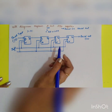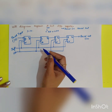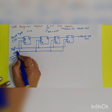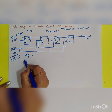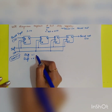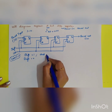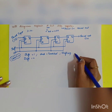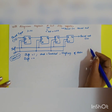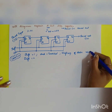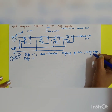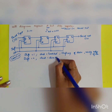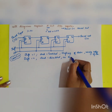This is the diagram of the 4-bit SISO register. For the working principle: Case 1 — when Shift equals 1, the clock is enabled and shifting occurs during the rising edge of the clock. When Shift equals 0, the clock is disabled, there is no shifting, and the register remains in the same state.